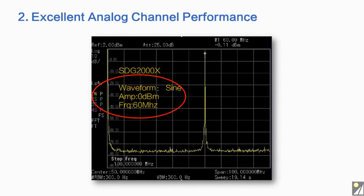The SDG2000X has high fidelity sine wave output. Almost no spurious waveforms are observed at a frequency of 60 megahertz and an amplitude of 0 dBm.